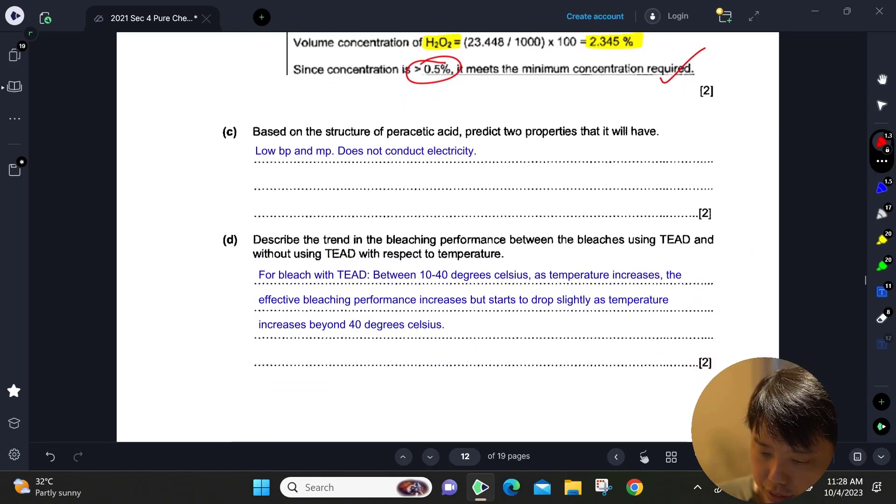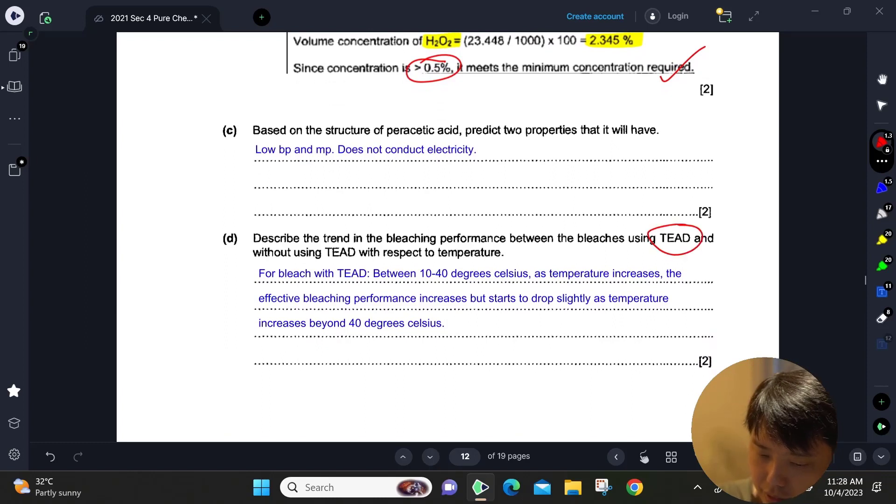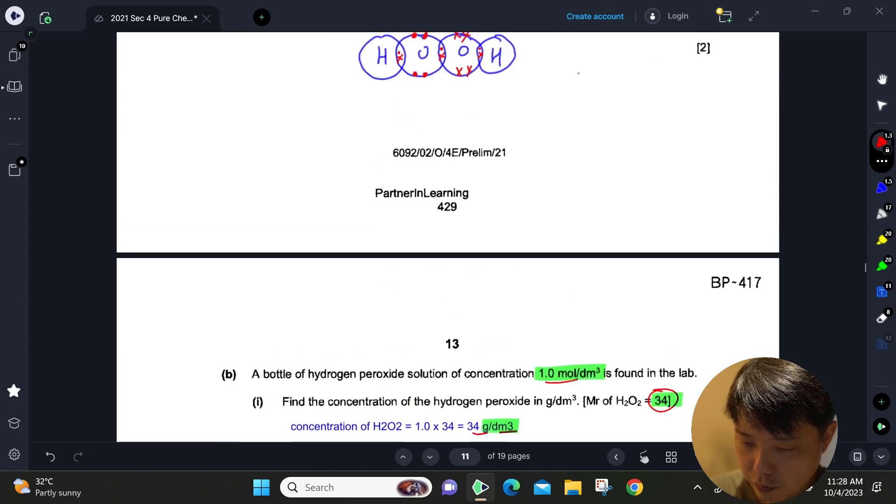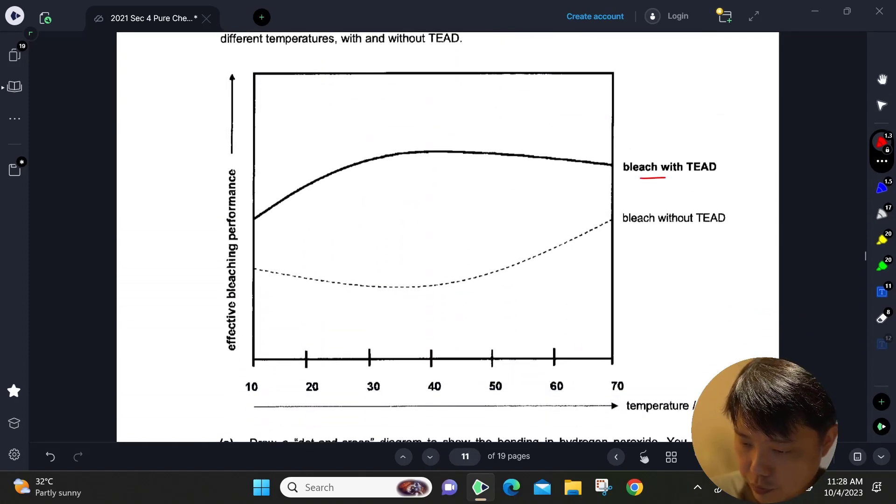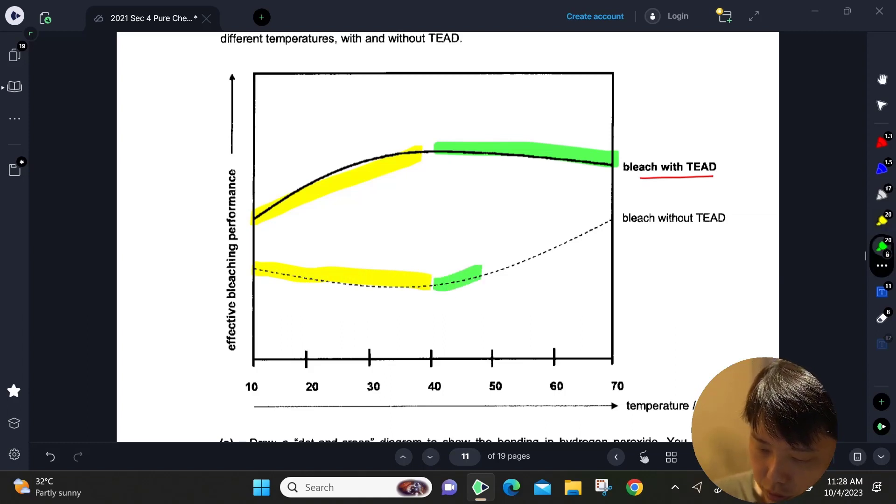Describe the trend in the bleaching performance between bleachers using TEAD and without using TEAD with respect to temperature. For bleach with TEAD, you basically have one trend here: from 10 to 40 degrees it's increasing with temperature, and then 40 to 70 it drops in performance. For without TEAD, it's the opposite: from 10 to 40 it is a drop in performance, but after 40 to 70, as temperature increases, there is an increase in bleaching performance without TEAD.